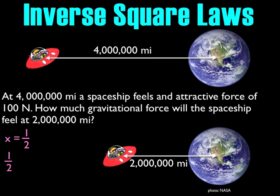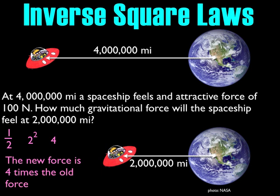The inverse square law is a set of instructions. The inverse of one-half is 2, squared is 4. So the force changes by a factor of 4. In other words, it goes from 100 N to four times 100 N, which is 400 N.